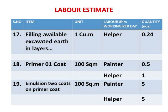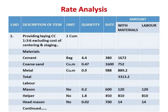This is the rate analysis format. I have taken a sample of one item for which the entire coefficients and rates are given, and the calculations are detailed. We can do this for any number of required items in this fashion. The item considered is cement concrete 1:3:6, excluding the cost of centering and staging. There are two parts: the material part and the labor part. Material coefficients include cement, coarse aggregate, and metal.